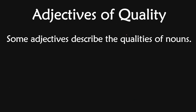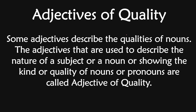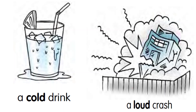Adjectives of quality — this is the first type. Some adjectives describe the qualities of a noun. The adjectives that are used to describe the nature of a subject or a noun, or showing the kind or quality of nouns or pronouns, are called adjectives of quality. Let's learn through examples. A cold drink — cold is showing the quality about the noun; drink is the noun. So cold is the adjective of quality. A loud crash — loud is the quality of this noun. So this is the adjective of quality.